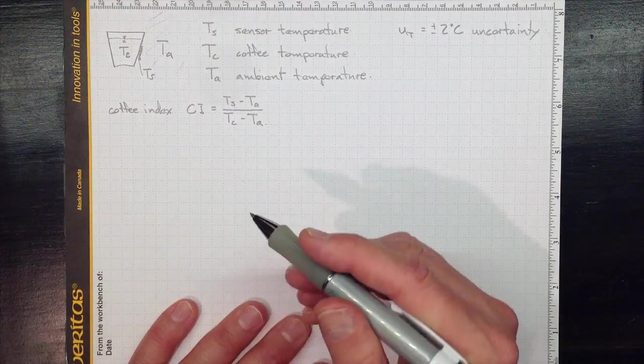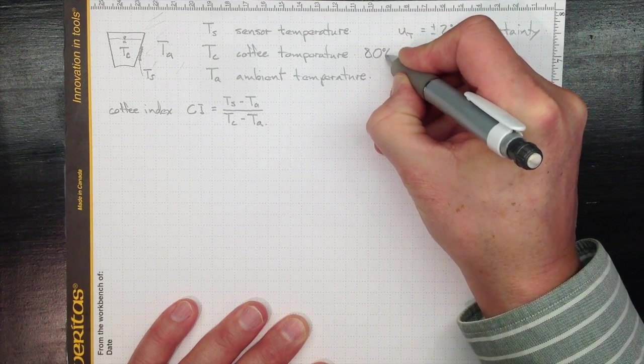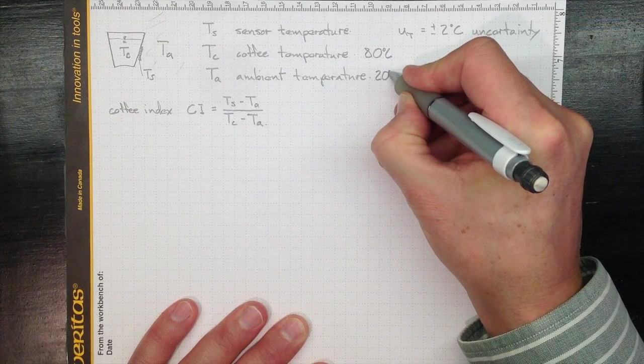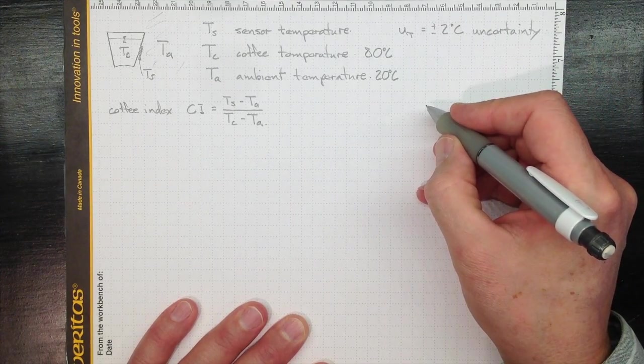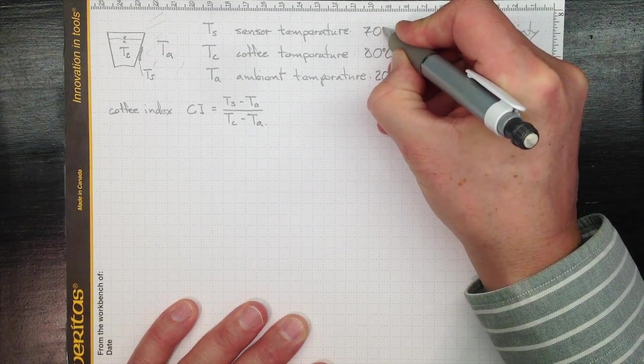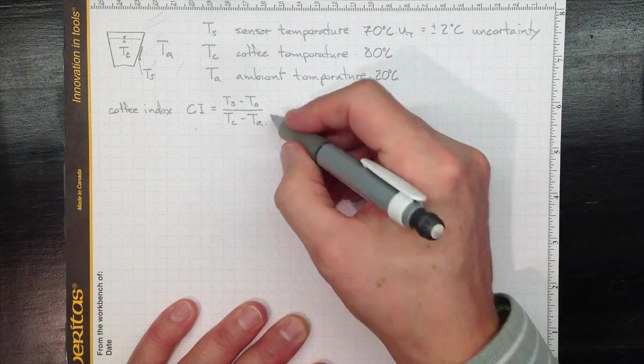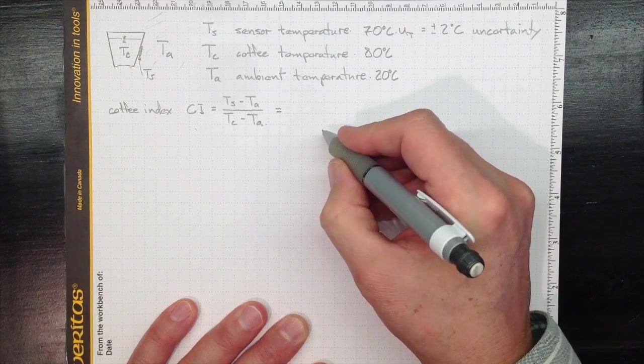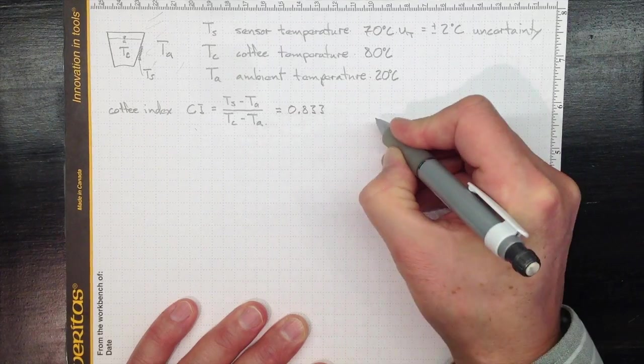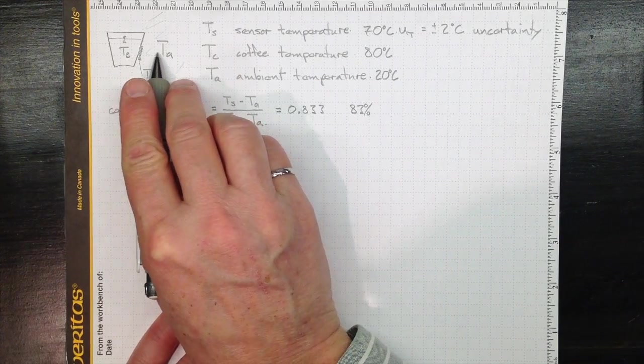So if we look at this calculation, let's suppose our coffee temperature is 80 degrees Celsius. And our ambient temperature is 20 degrees Celsius. So this is a hot cup of coffee that we've just poured. And we measure the sensor temperature and we get that the sensor temperature is 70 degrees Celsius. So if we plug all of that in here,